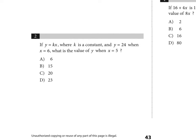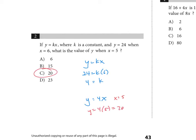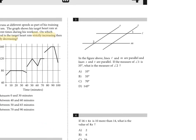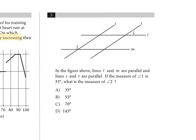Number two: if y equals kx where k is constant, and y is 24 when x is 6, what's the value of y when x is 5? Find k first: 24 equals k times 6, divide both sides by 6, so k equals 4. The equation is y equals 4x. When x equals 5, y equals 4 times 5, which is 20.